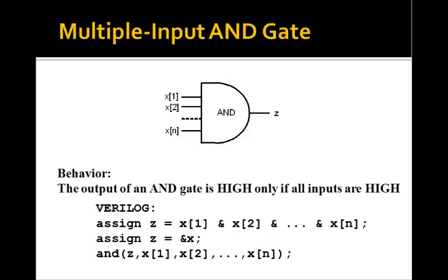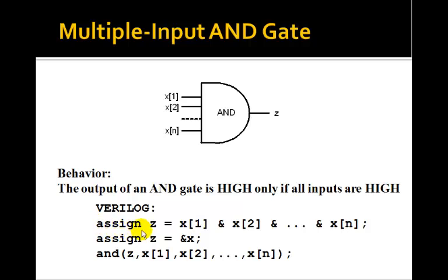Let's look at how it works for an AND gate. We could have N inputs to the AND gate. The behavior of an AND gate is that the output is high only if all inputs are high. In Verilog, we use this assignment statement, saying: assign z equals x1 and x2 and x3. In Verilog, we use square brackets for the array indices.